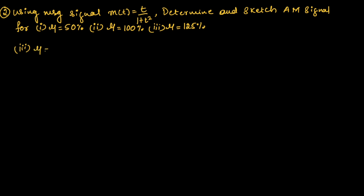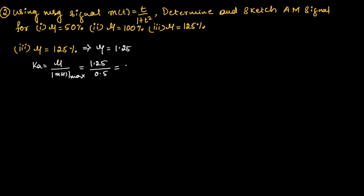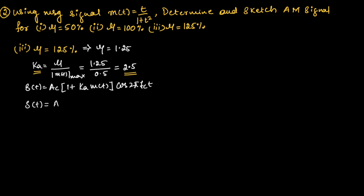Now let us take the third case where modulation index is 125%, meaning μ = 1.25. ka = μ / m(t)_max = 1.25 / 0.5 = 2.5. Therefore s(t) = Ac × [1 + 2.5 × t/(1+t²)] × cos(2πfct). This is the AM signal expression for modulation index 125%.